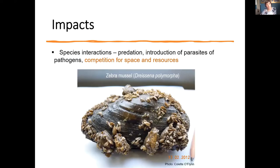Invasive species can compete with native species for space and resources — particularly riparian plants but also in the aquatic environment. This image shows a native swan or duck mussel with zebra mussels settled on it at various sizes. Zebra mussels settle on anything hard: a mussel, a stone, a water intake pipe — whatever it might be.